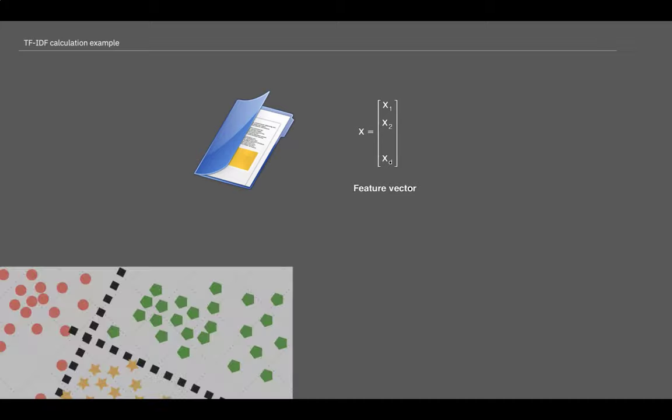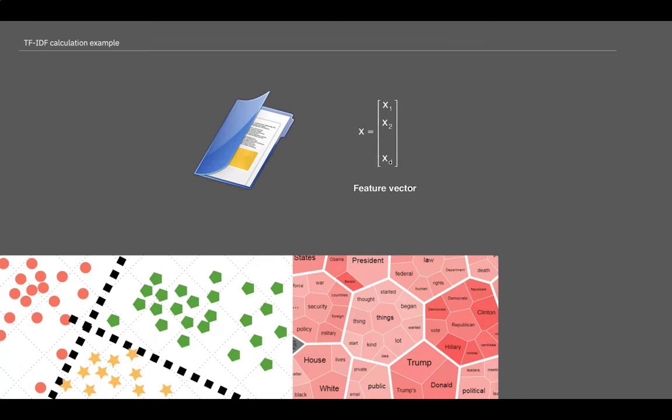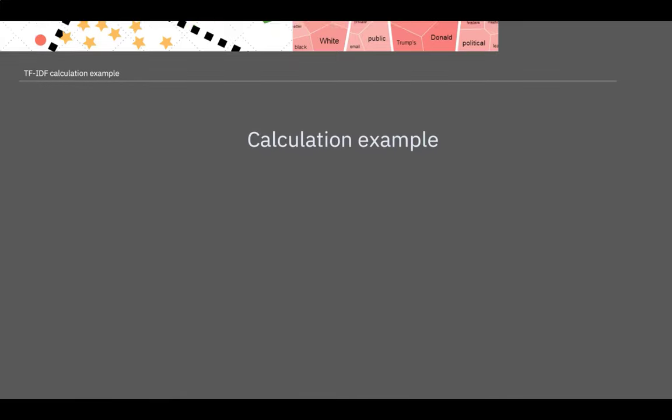Each document thus becomes a feature vector and the corpus is a set of these feature vectors. This can be used in data mining algorithms for classification, clustering, or retrieval. That was a quick introduction to TF-IDF and now let's go to a simple task.